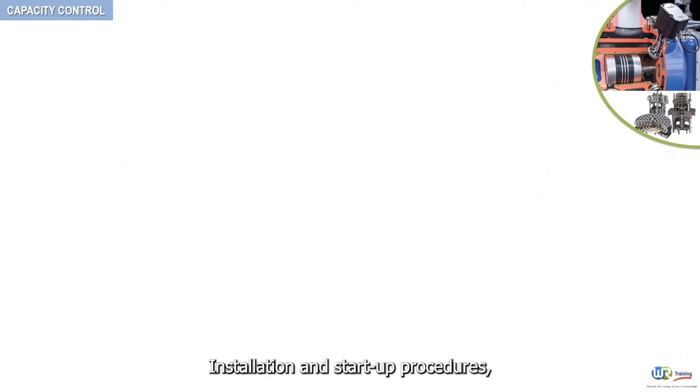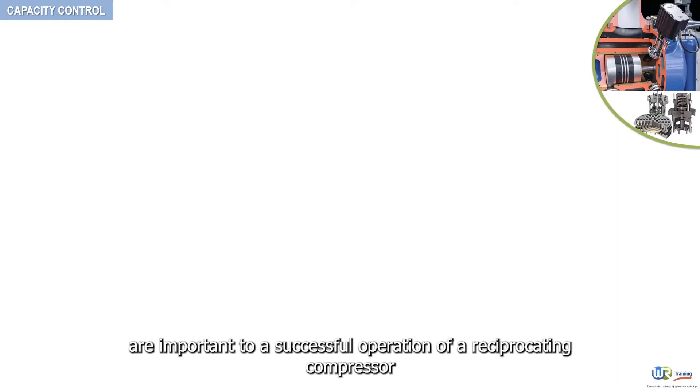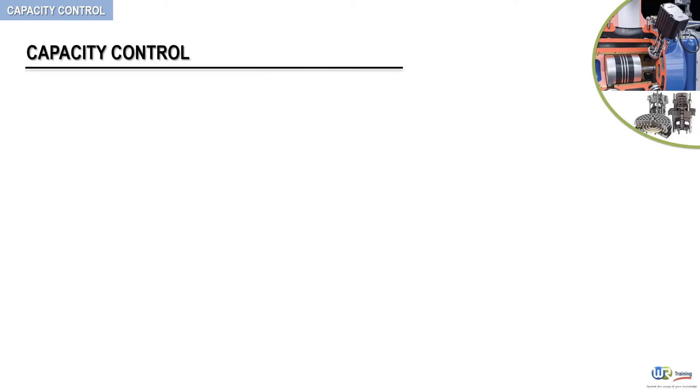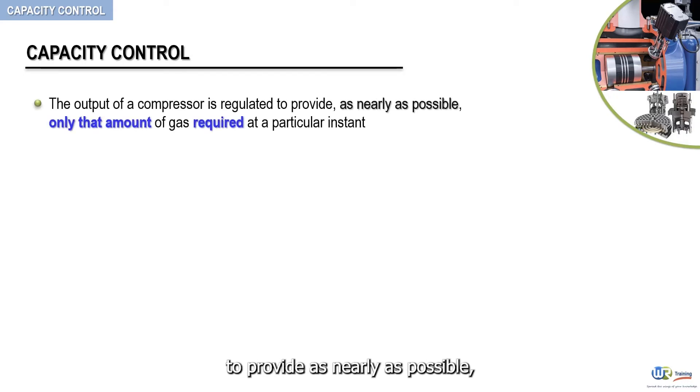Installation and startup procedures, troubleshooting, and maintenance are important to the successful operation of a reciprocating compressor. Of equal importance is the subject of capacity control. Compressor capacity control is the method by which the output of the compressor is regulated to provide, as nearly as possible, only that amount of gas required at a particular instant.